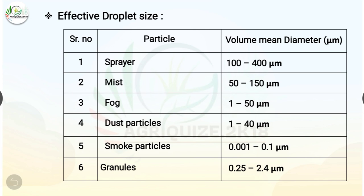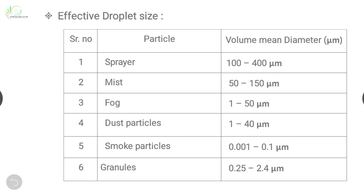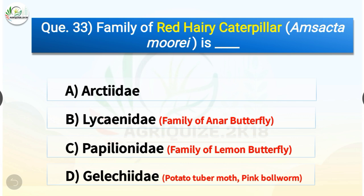For sprayer the volume mean diameter ranges from 100 to 400 micrometers; for mist, 50 to 150 micrometers; for fog, 1 to 50 micrometers; for dust particles, 1 to 40 micrometers; for smoke particles, 0.001 to 0.1 micrometers; and for granules, 0.25 to 2.4 micrometers.